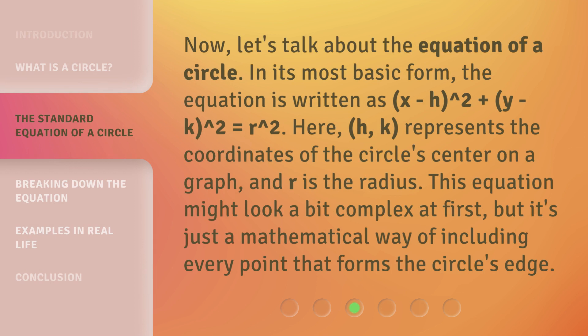Now, let's talk about the equation of a circle. In its most basic form, the equation is written as (x - h)² + (y - k)² = r². Here, (h, k) represents the coordinates of the circle's center on a graph, and r is the radius. This equation might look a bit complex at first, but it's just a mathematical way of including every point that forms the circle's edge.